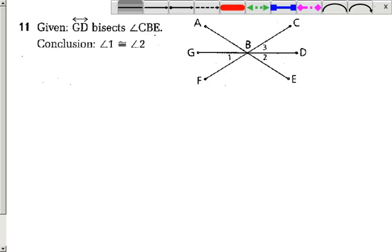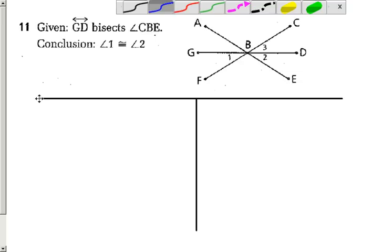This is a proof. Obviously it's a proof because it doesn't ask you to find anything, it asks you to prove a conclusion. The conclusion is that angle 1 and angle 2 are congruent.